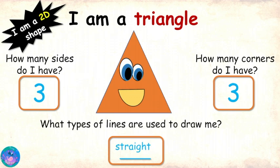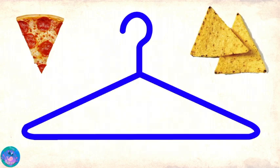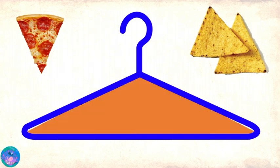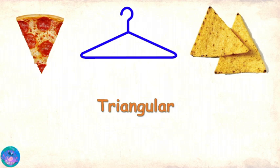Zoe, now you know me well. Can you identify some objects that have my shape? A pizza slice? Nachos? A clothes hanger? I think that looks like a triangle too! All these objects are shaped like a triangle, or I can say that they are triangular! Awesome, Zoe! Now you can meet the next shape!